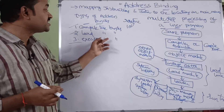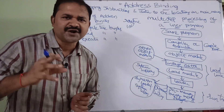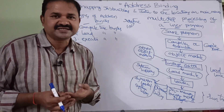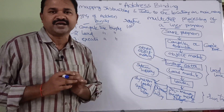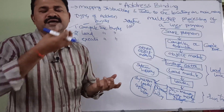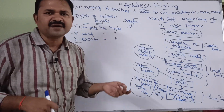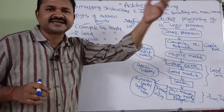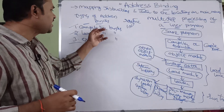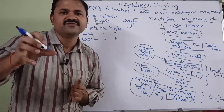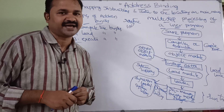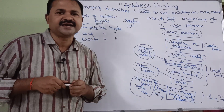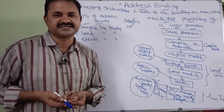The last type is execution time binding. Today, all modern operating systems and all object-oriented and interpreter-based languages support execution time binding only. We know where the process resides in main memory during execution time. Generally, we can't know where the process resides during compilation or load time — that information is known during execution time. These are the different types of address binding in memory management of operating systems.